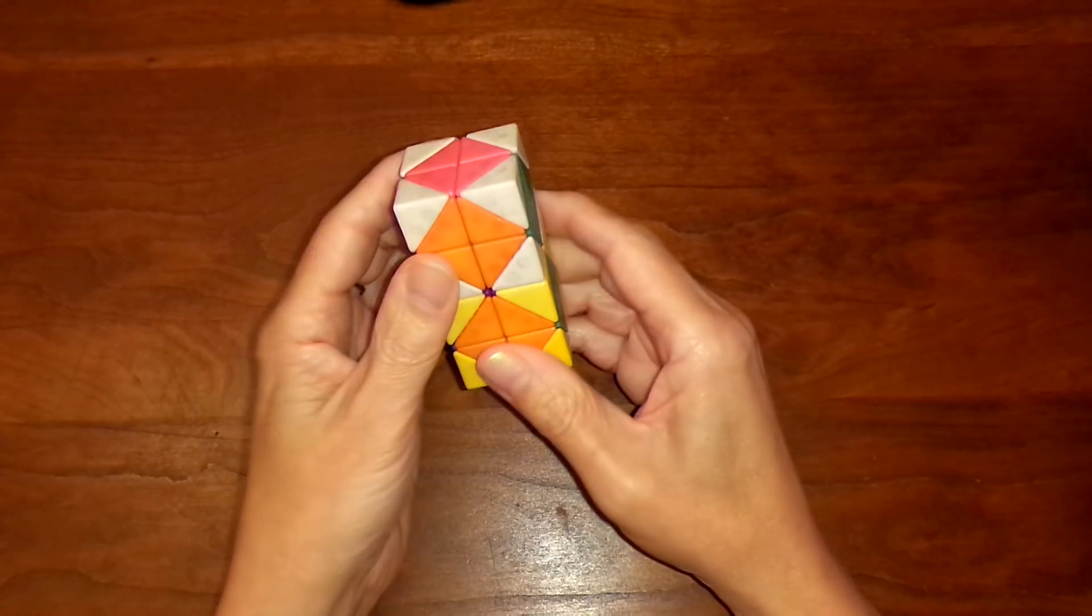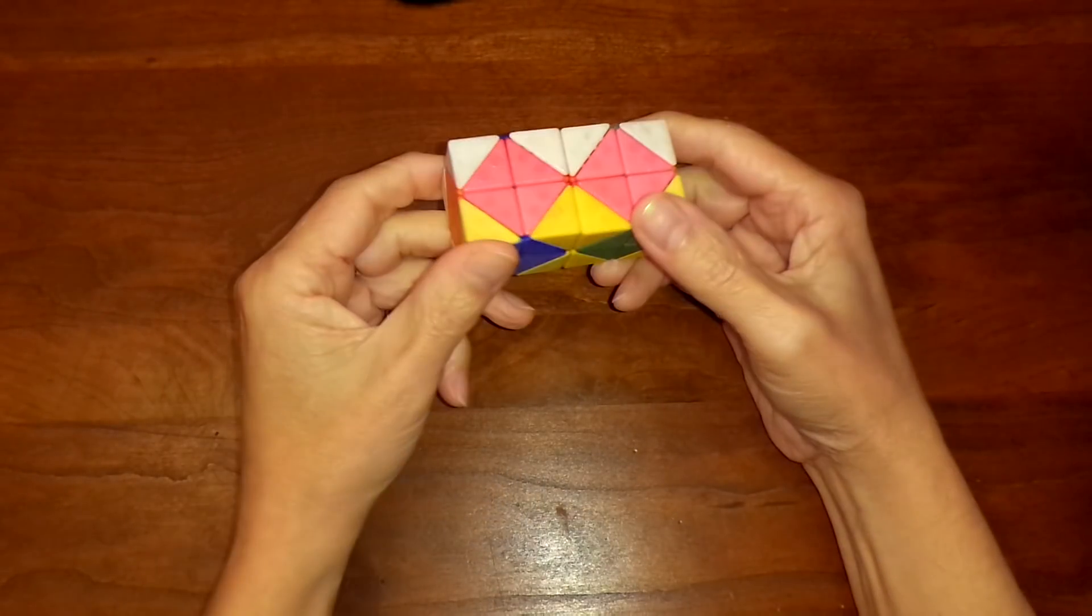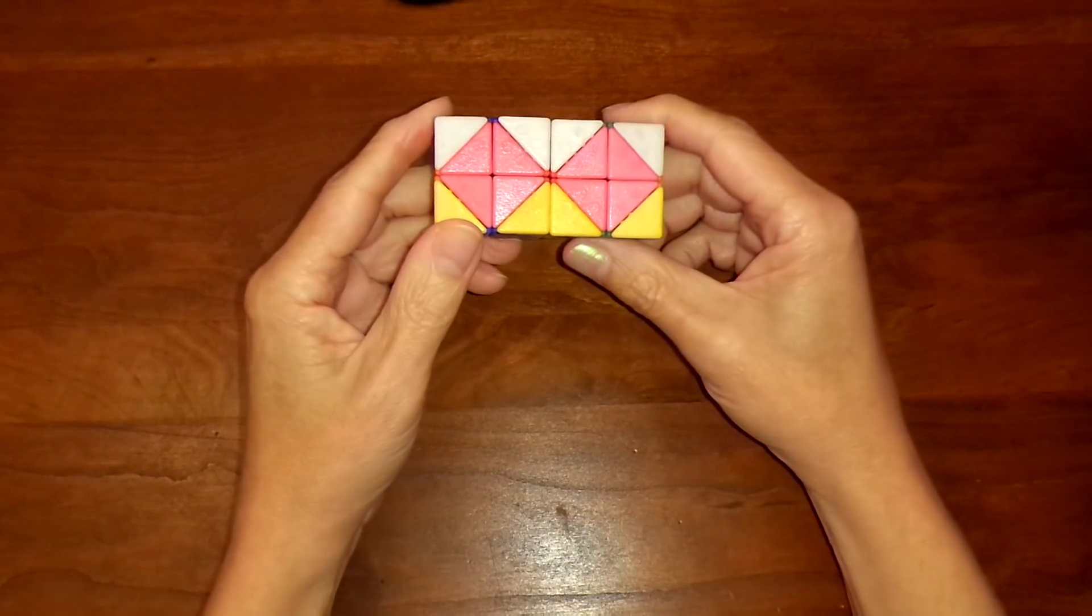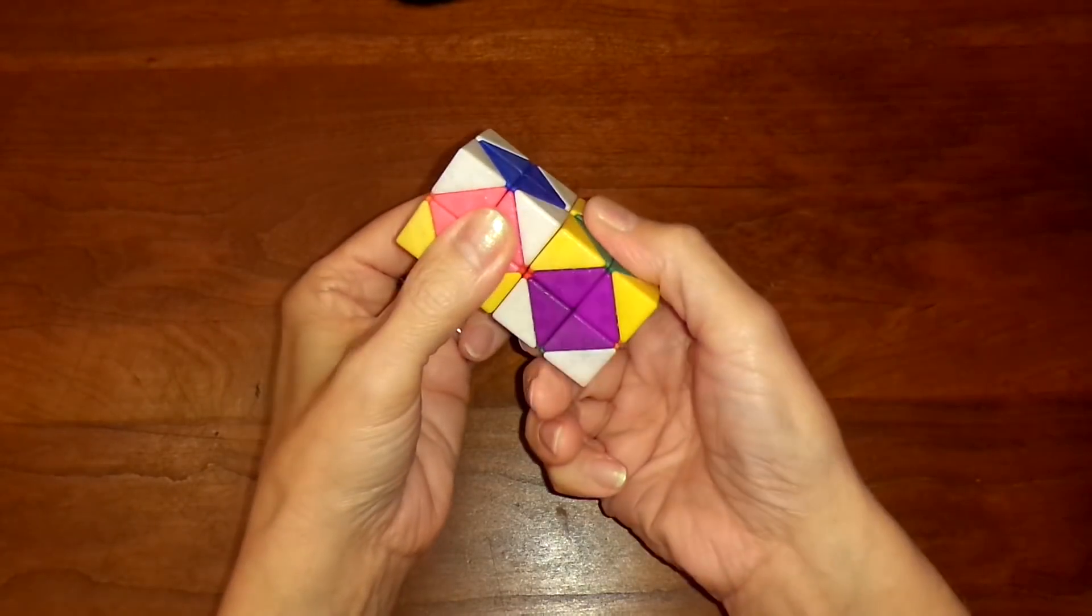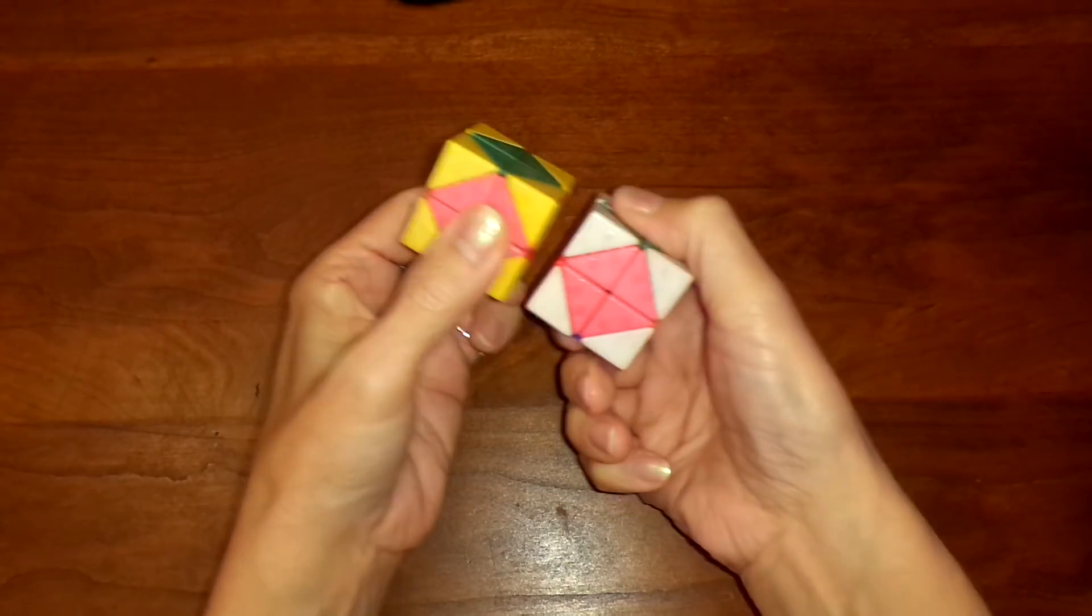Another valid compound move is this crazy looking thing that I call a clamshell move. It's quite handy and you can prove that it's valid by undoing it using simple 180 degree twists like this.